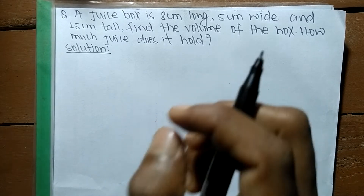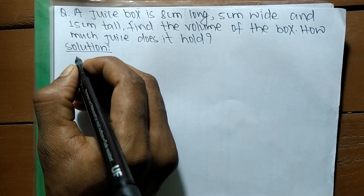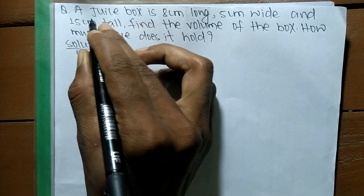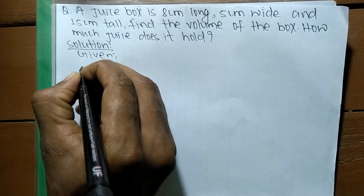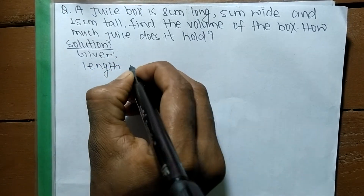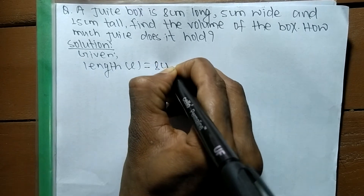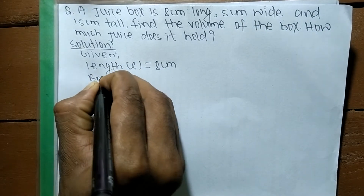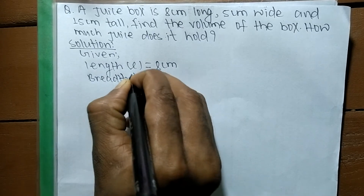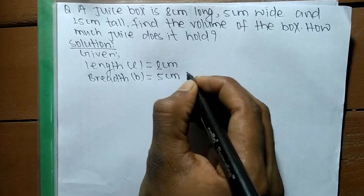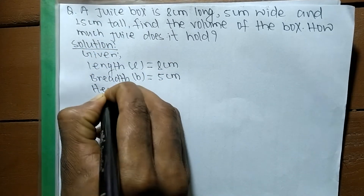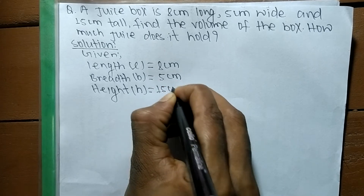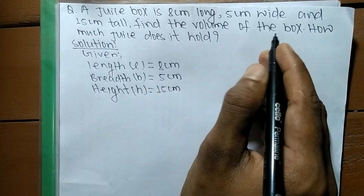To find out the volume, first of all you have to write what is given. So given here is: the juice box is 8 centimeters long, so we denote length by L = 8 centimeters. We have given its breadth, so we denote breadth by B = 5 centimeters. And 15 centimeters tall means we have given its height, so we denote height by H = 15 centimeters.